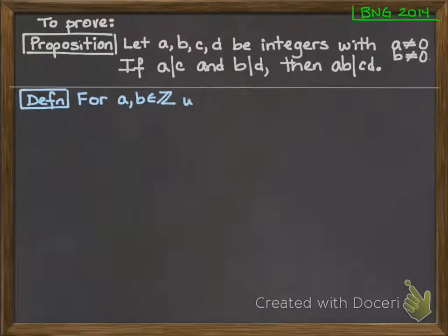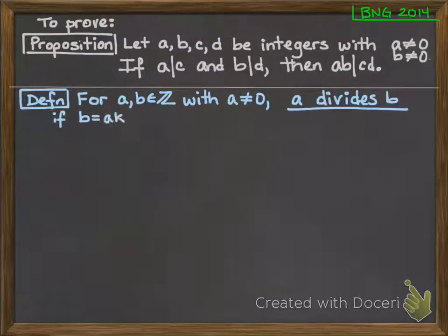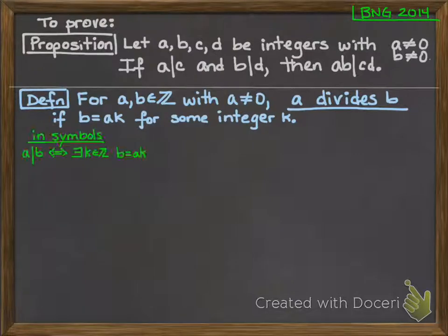So here is the definition. For a and b in the integers with a not equal to 0, we say a divides b if b is equal to a times k for some integer k. Oftentimes I like to write this in symbols. In symbols it looks like this: a divides b if and only if there is an integer k such that b is equal to ak.